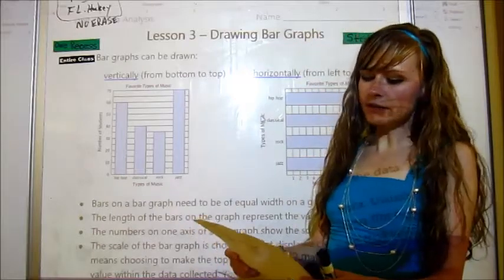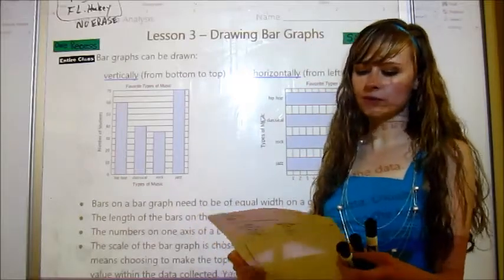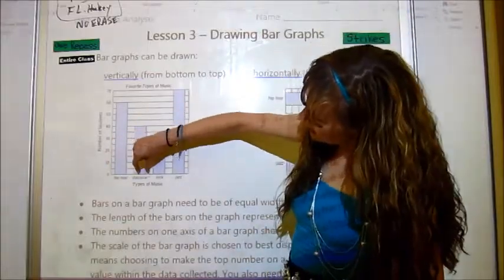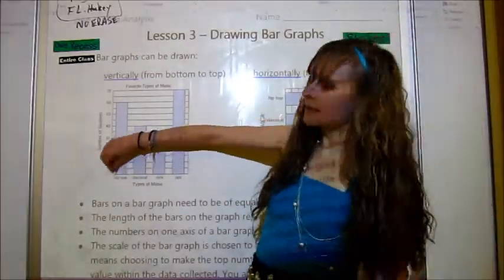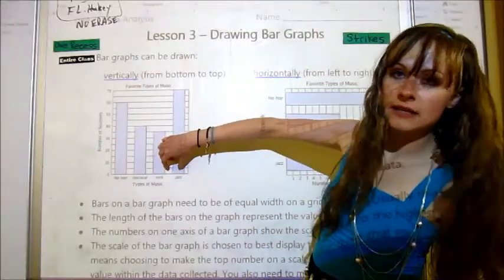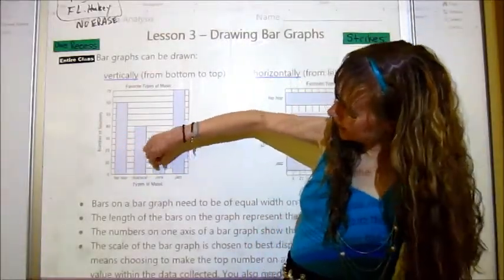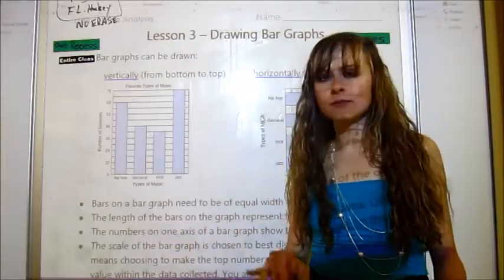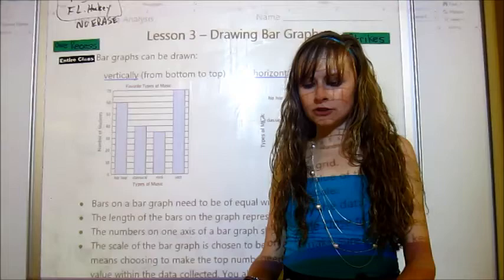It says that bars on a bar graph need to be of equal width on the grid. So that means that each one of these is the same width. We don't have a little skinny one and then a wide one and then a medium one. They're all the same width. So that's what you need to make sure that you do.